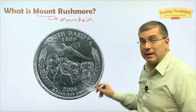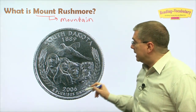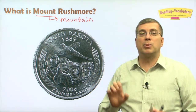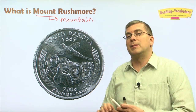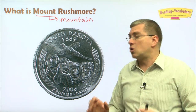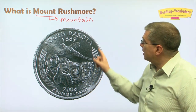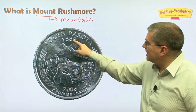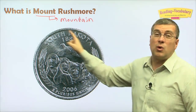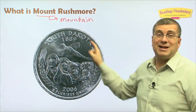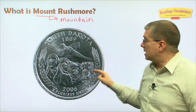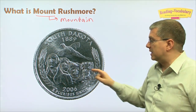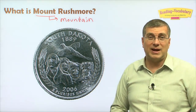Here are some more pictures of Mount Rushmore. This is a coin used in America — a coin that shows famous people or places. Many coins in America do that. This coin shows Mount Rushmore. Look at the date: 1889. This coin is very old, but it celebrates the making of Mount Rushmore. We can see the four faces here, and we'll talk about those four faces in the reading.